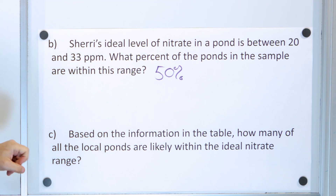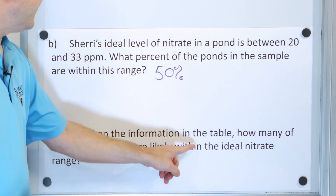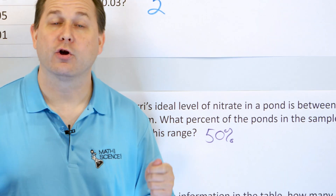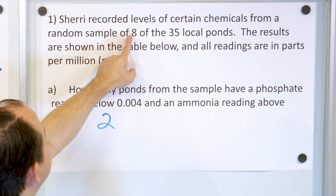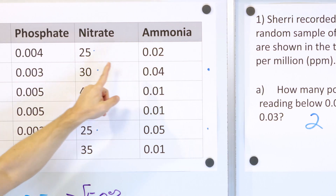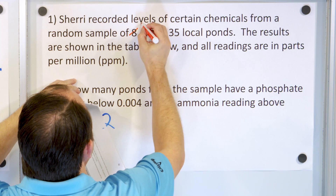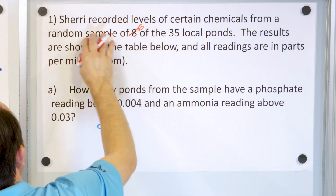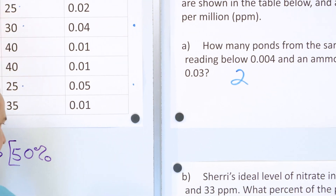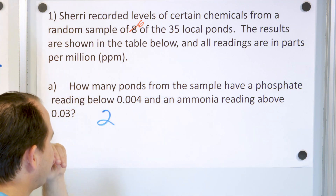Part C: Based on the information in the table, how many of the local ponds are likely to be within the ideal range of nitrate? We just figured out that 50% of the sample ponds are in the ideal range. There are 35 ponds total. Note: the problem statement said eight ponds but our table only has six — that's a typo, but we used the correct number of six in our calculation, so everything is correct.